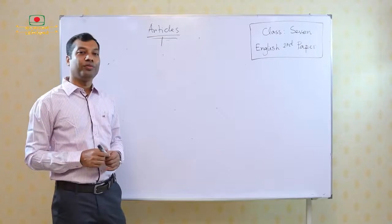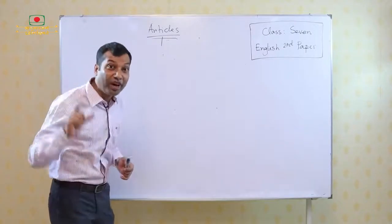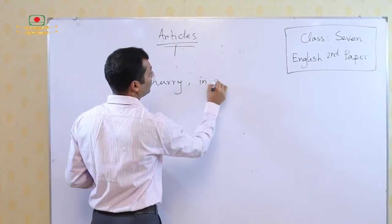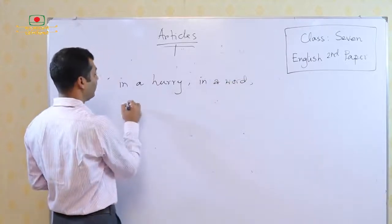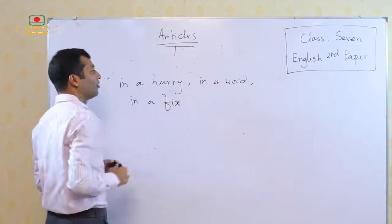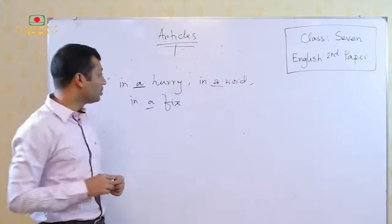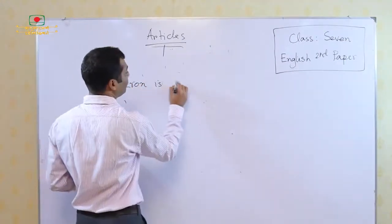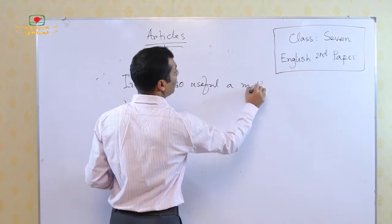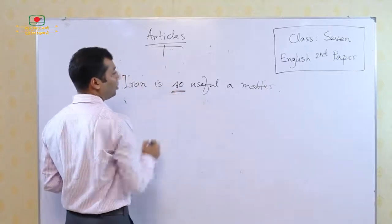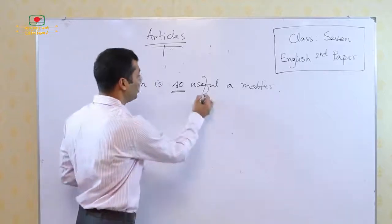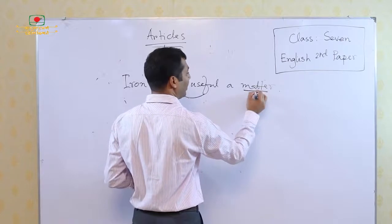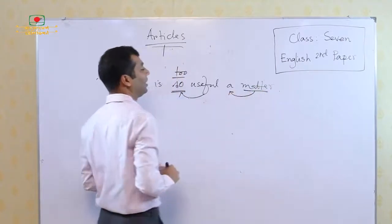Now we have to know some special uses of the article A or AN. So in some special phrases, the article A is used. For example: in a hurry, in a word, in a fix. These are common phrases where you must use the article A or AN. Come to the next rule: 'Iron is so useful a matter.' Look at the use of 'so' here. So if before the adjective we use 'so' or 'too', then before the noun at the very end you have to use the article A or AN.